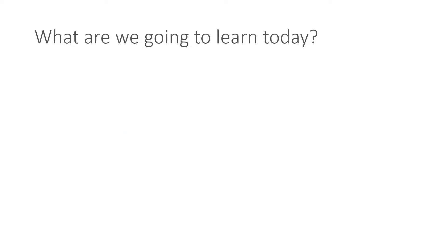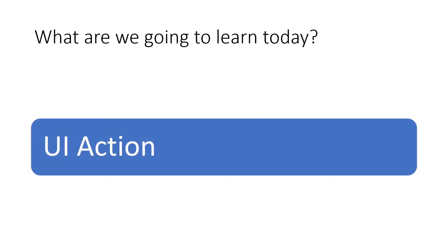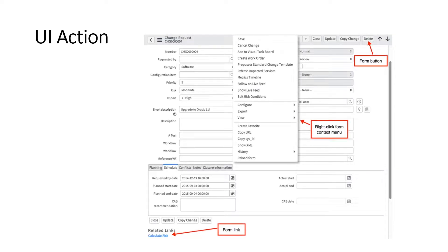Today we are going to learn about UI action — another very important customization. UI action mainly works with buttons. With the help of UI action you can create buttons, links, and menus. You can see in this picture of a form view of a change request — it can be an incident, problem, or anything — there are buttons at the top, a context menu, and related links.